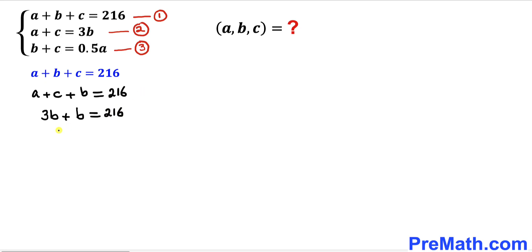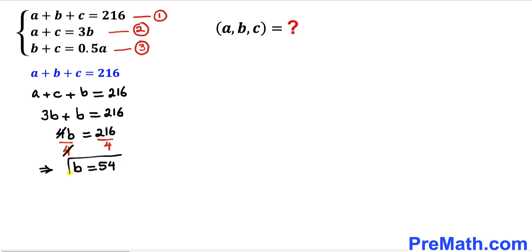Let's combine the like terms. So three times b plus b gives us four times b equals 216. Dividing both sides by four, the fours cancel, so our b value turns out to be 54.